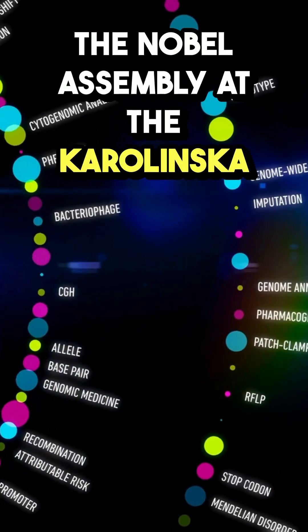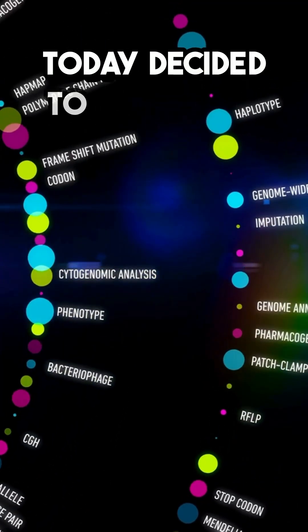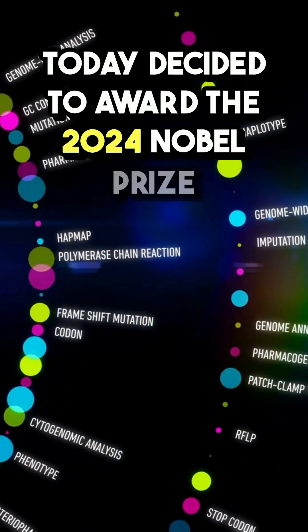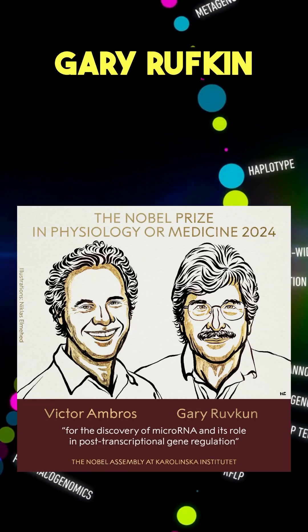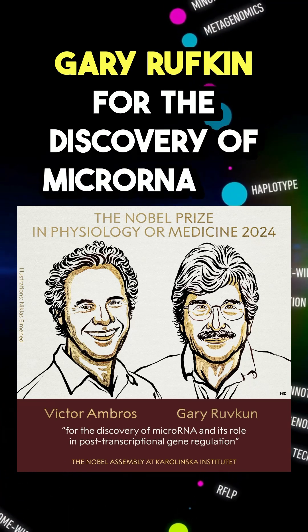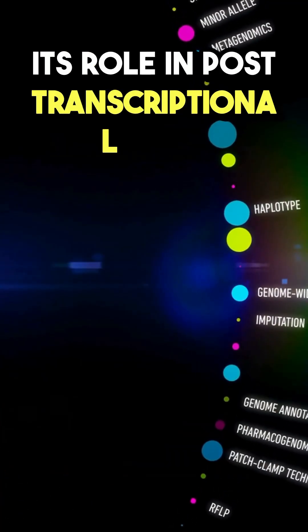The Nobel Assembly at the Karolinska Institutet has today decided to award the 2024 Nobel Prize in Physiology or Medicine to Victor Ambrose and Gary Ruvkin for the discovery of microRNA and its role in post-transcriptional gene regulation.